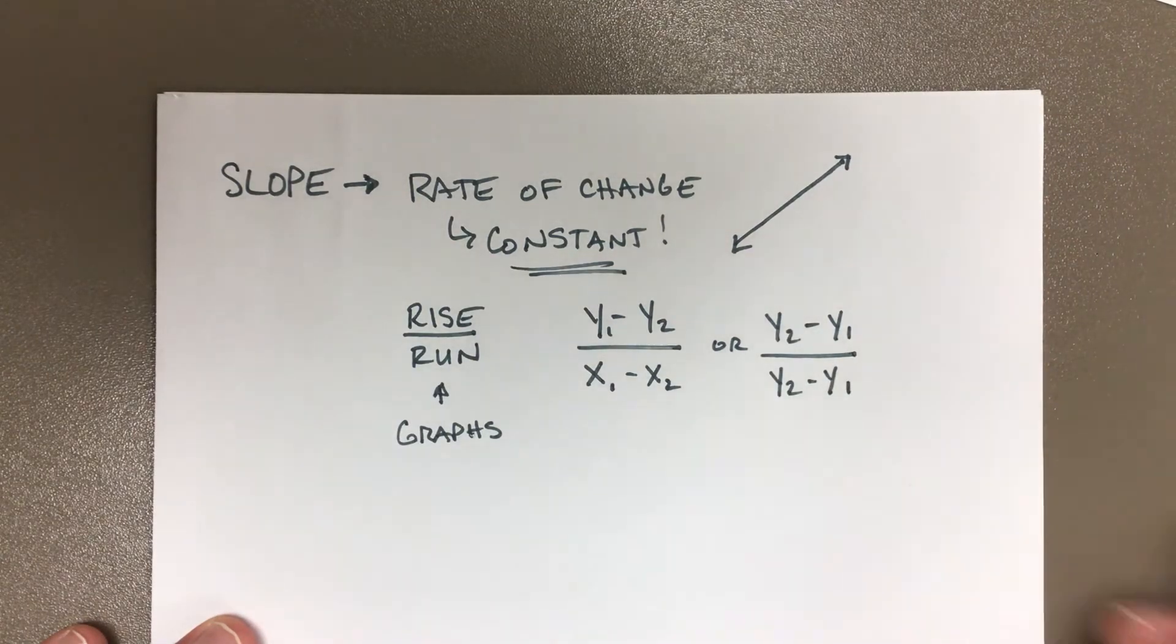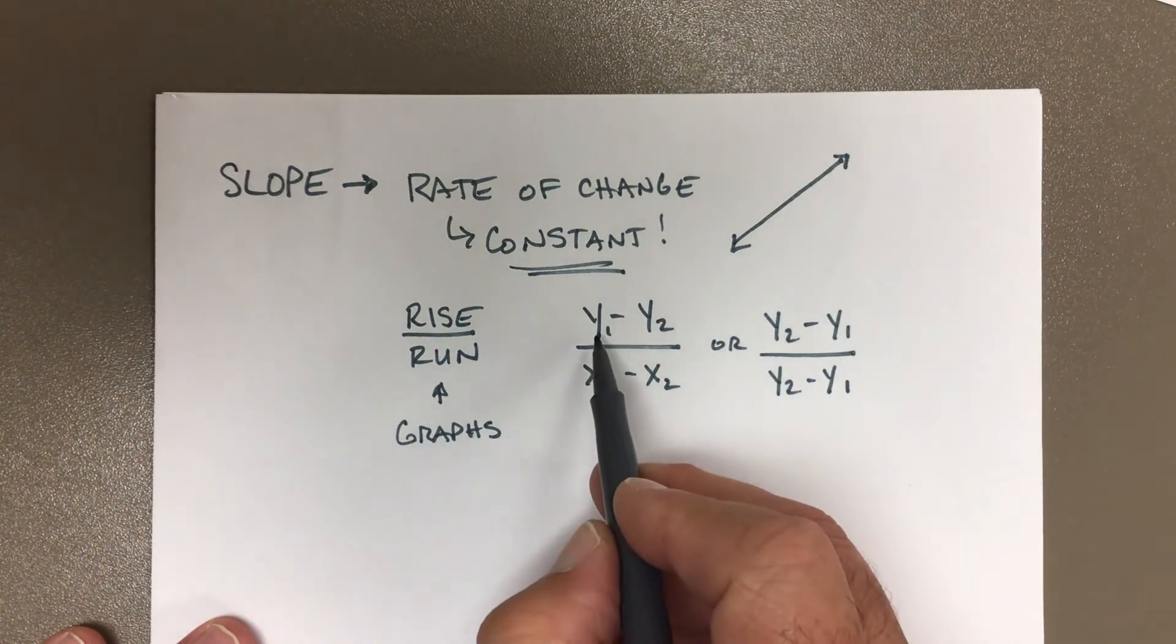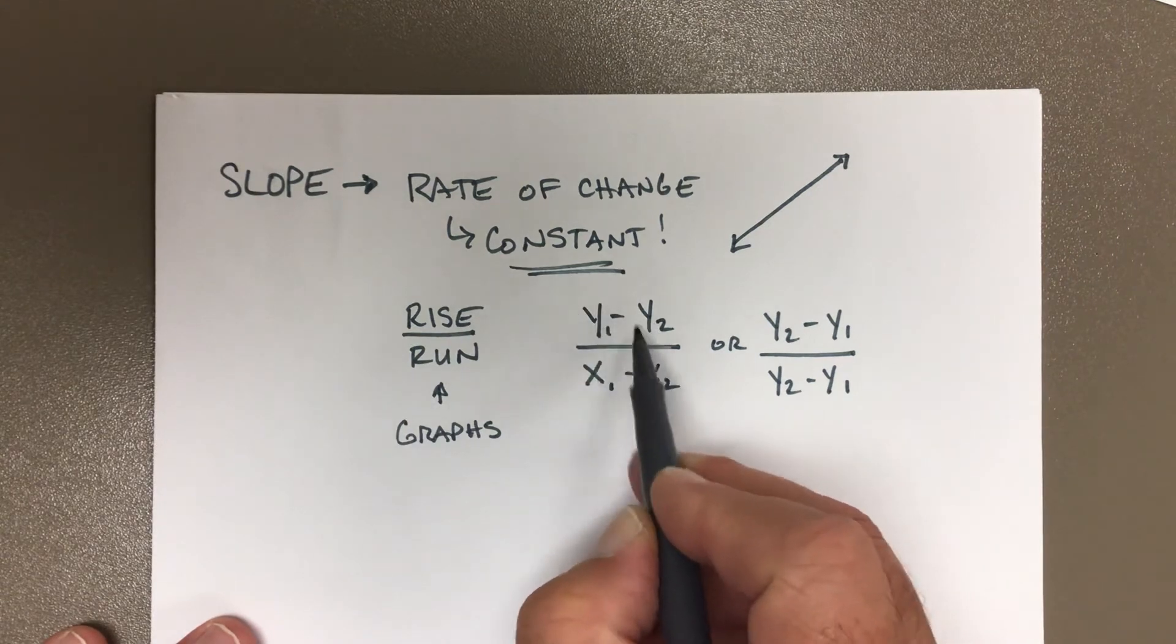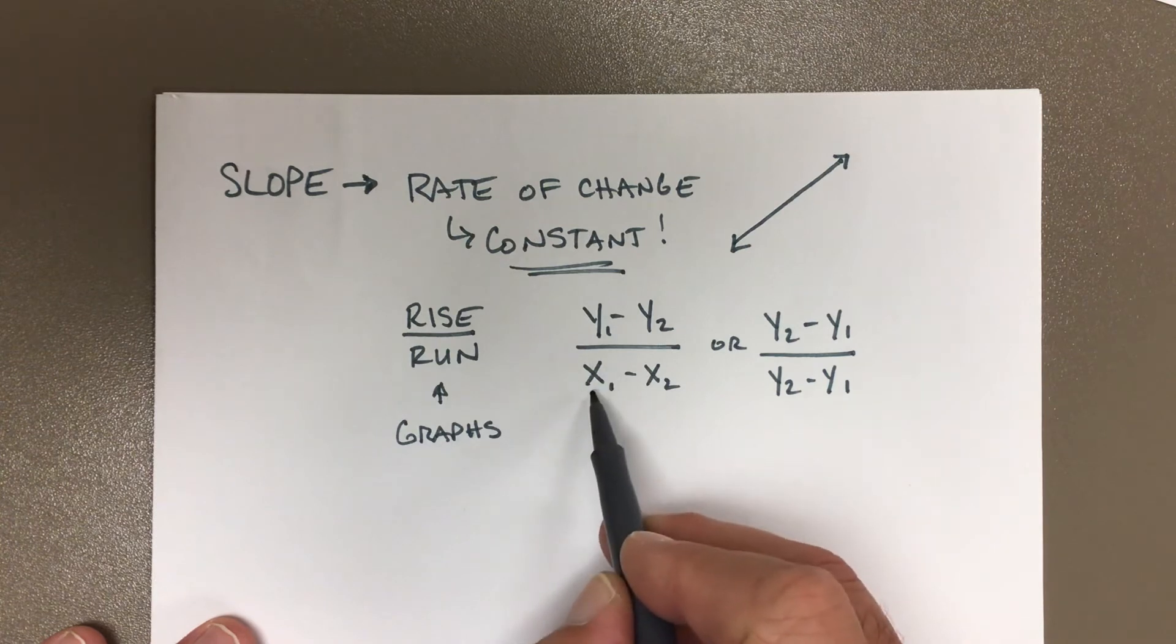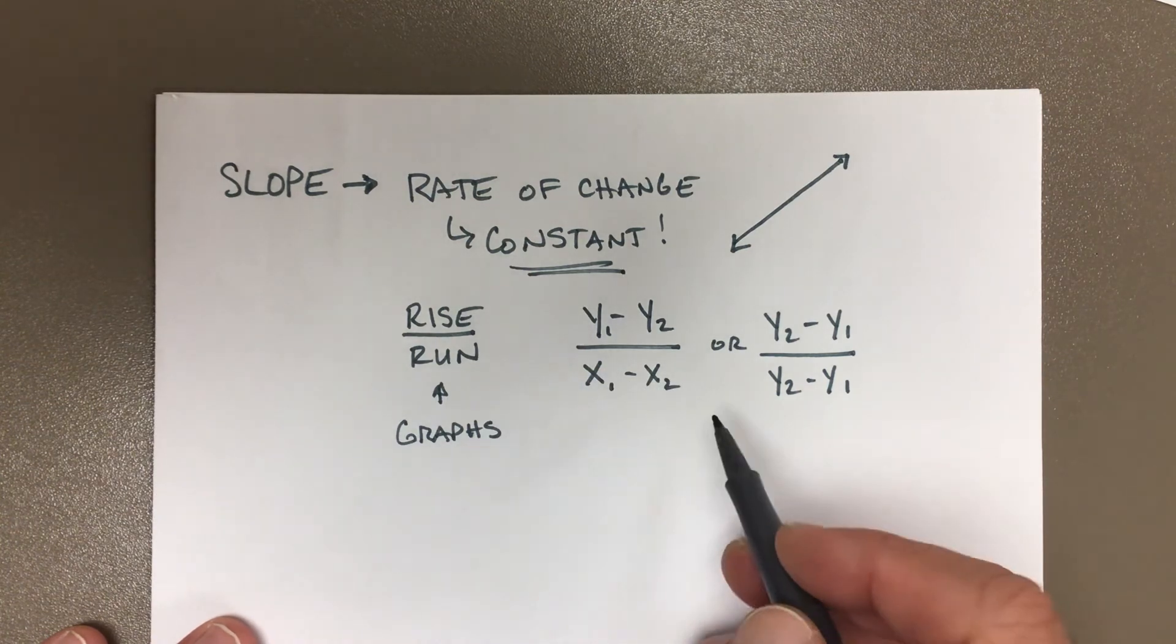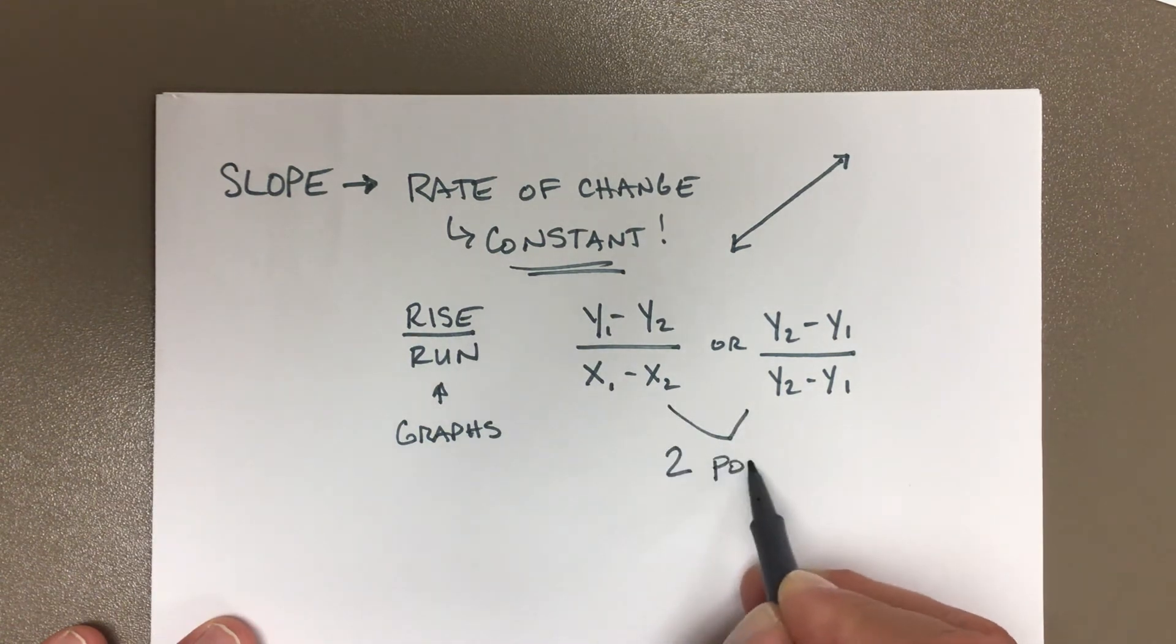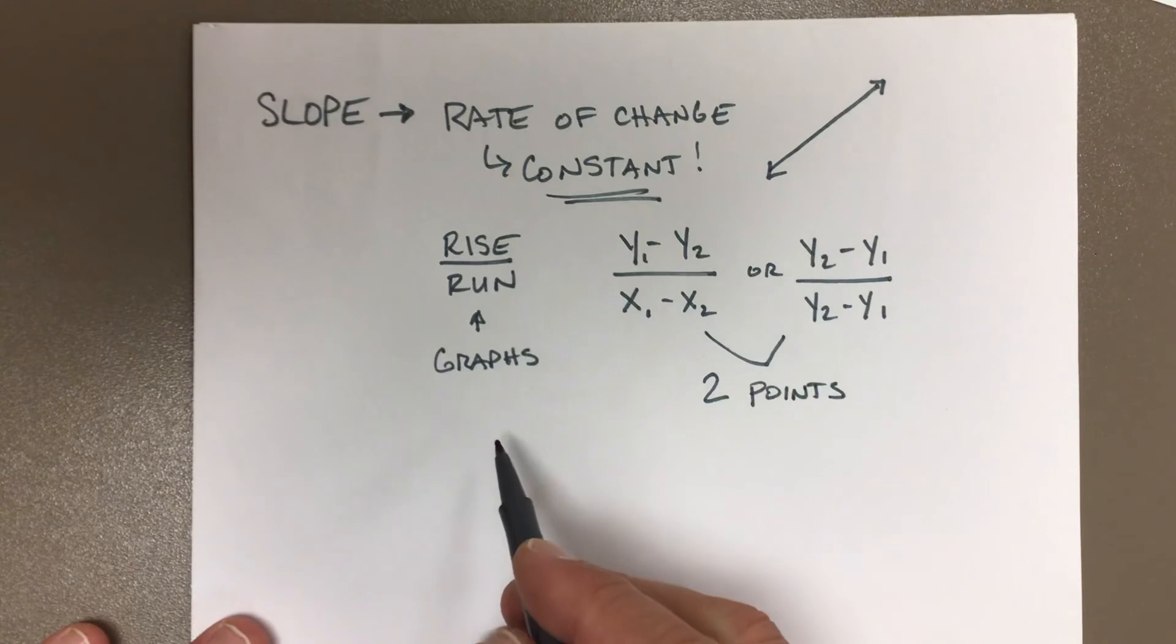as long as you are consistent. So this is y₁ minus y₂ over x₁ minus x₂. We use this most of the time when we have two points. And then last but not least, we have this...